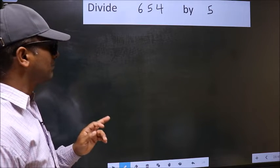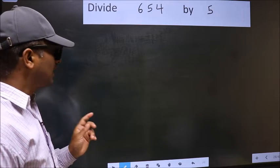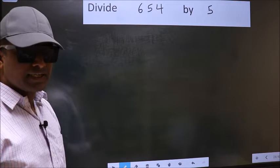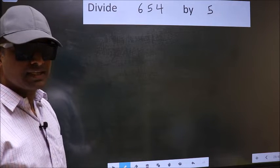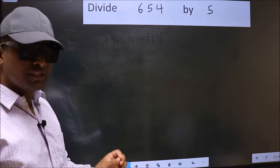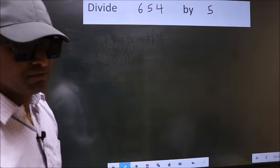Divide 654 by 5. While doing this division, many do this mistake. What is the mistake that they do? I will let you know. But before that, we should frame it in this way.